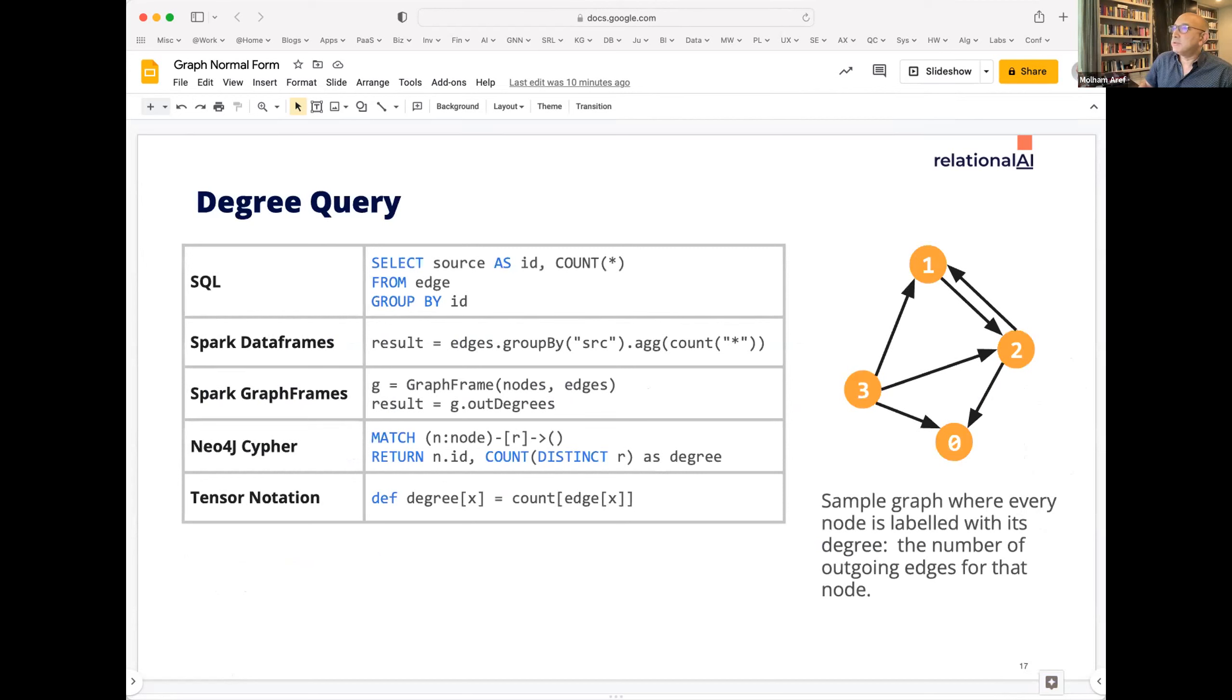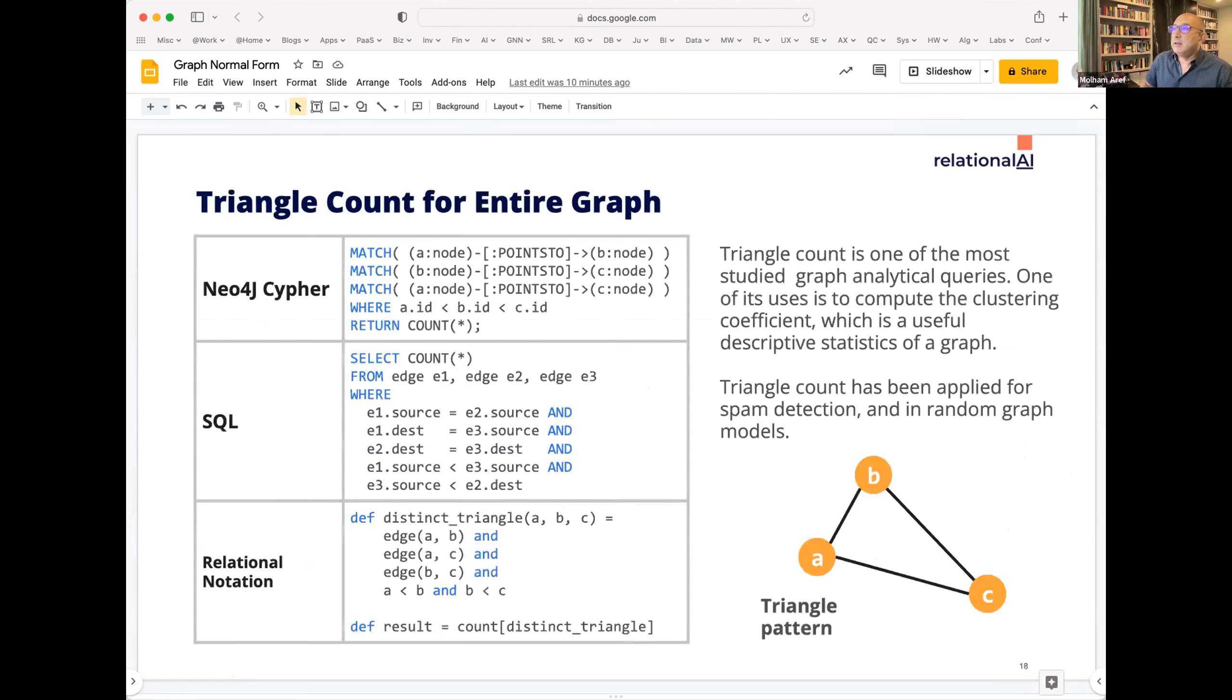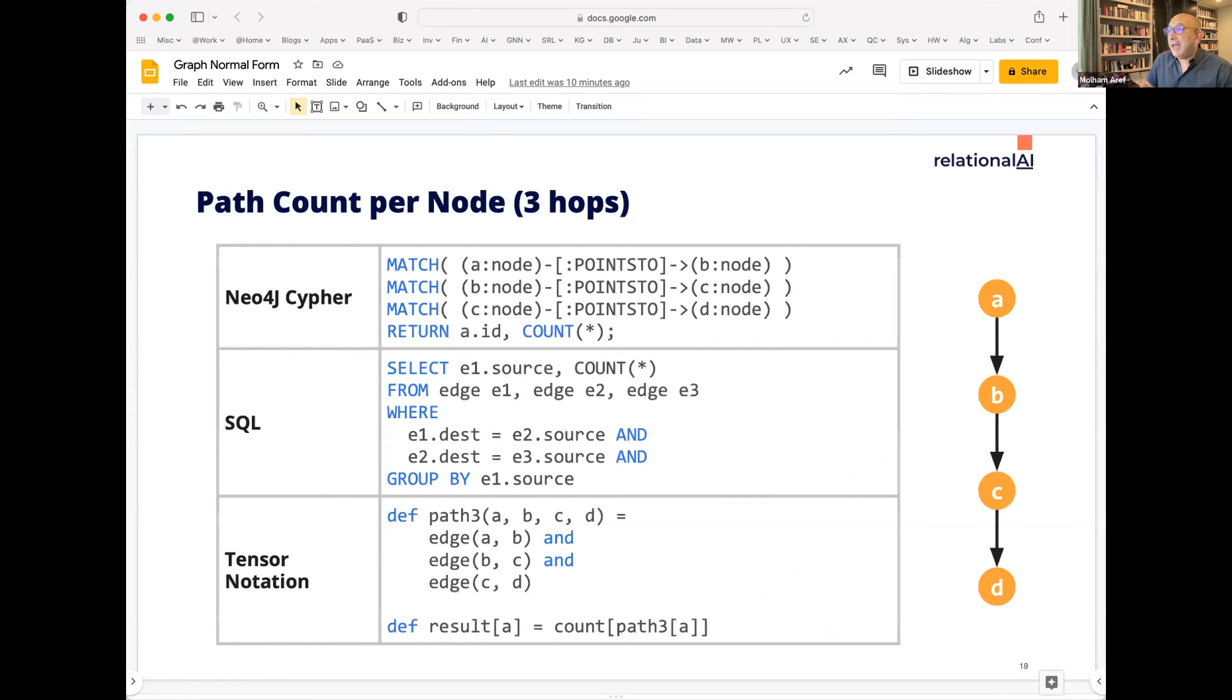So here are some examples of how you might express a degree query in SQL and cipher and tensor notation I showed you earlier using data frames and graph frames and so on. Here are triangle query. It's a self join of the edge relation three times expressed in cipher, SQL, and a relational notation like data log. Pretty straightforward. Paths, again, represented the same way you're joining through the edge relation a few times here as well.